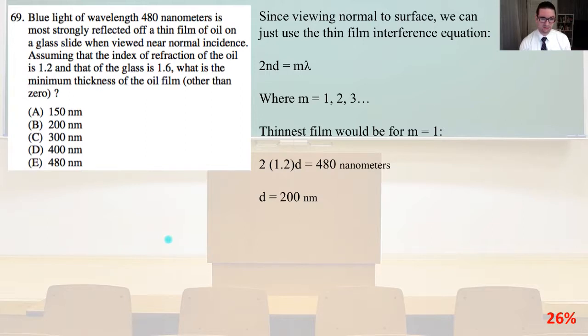So the thinnest film would be for m equals 1. So 2 times 1.2d equals 480 nanometers. So d equals 200 nanometers. That is answer B.